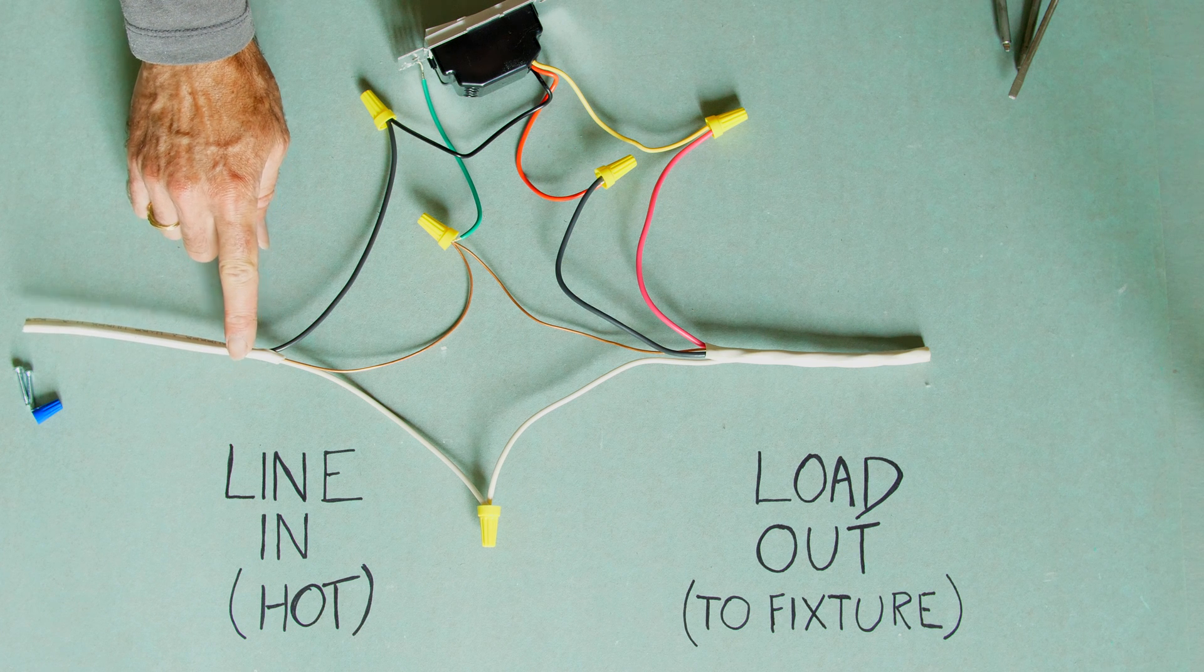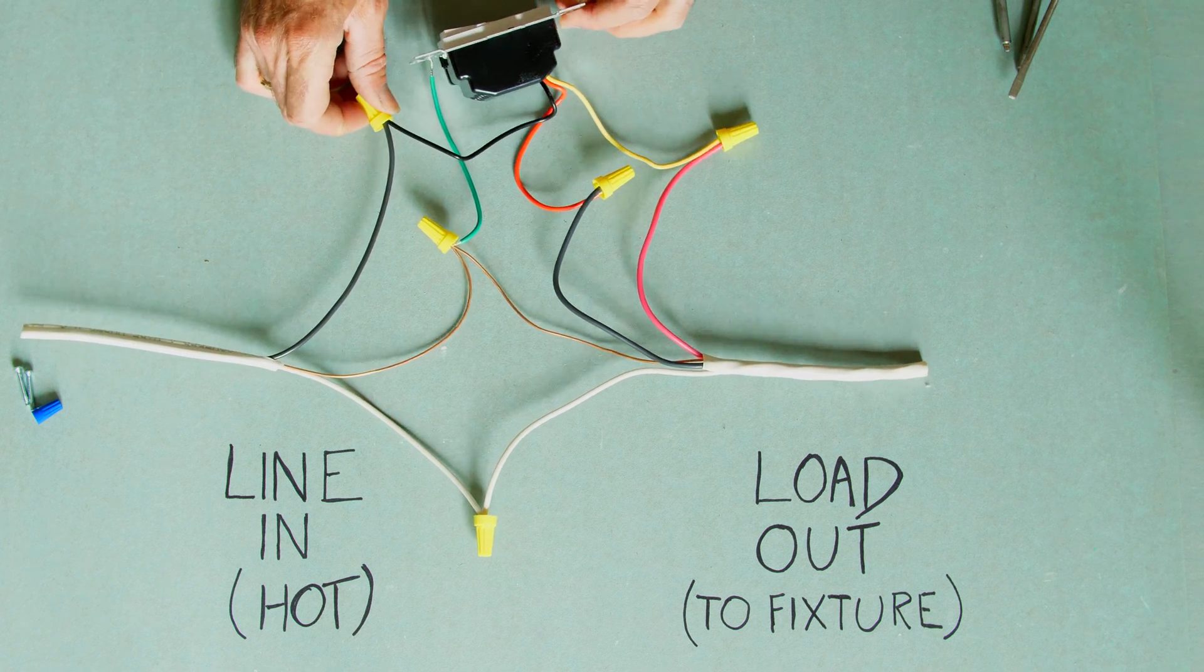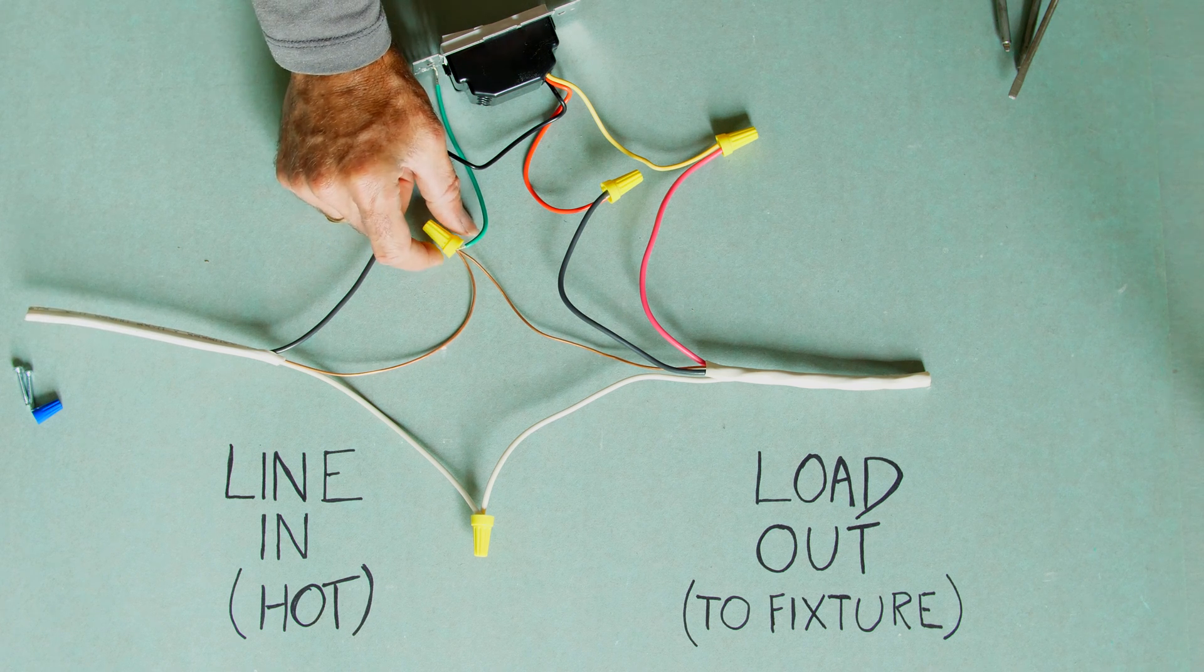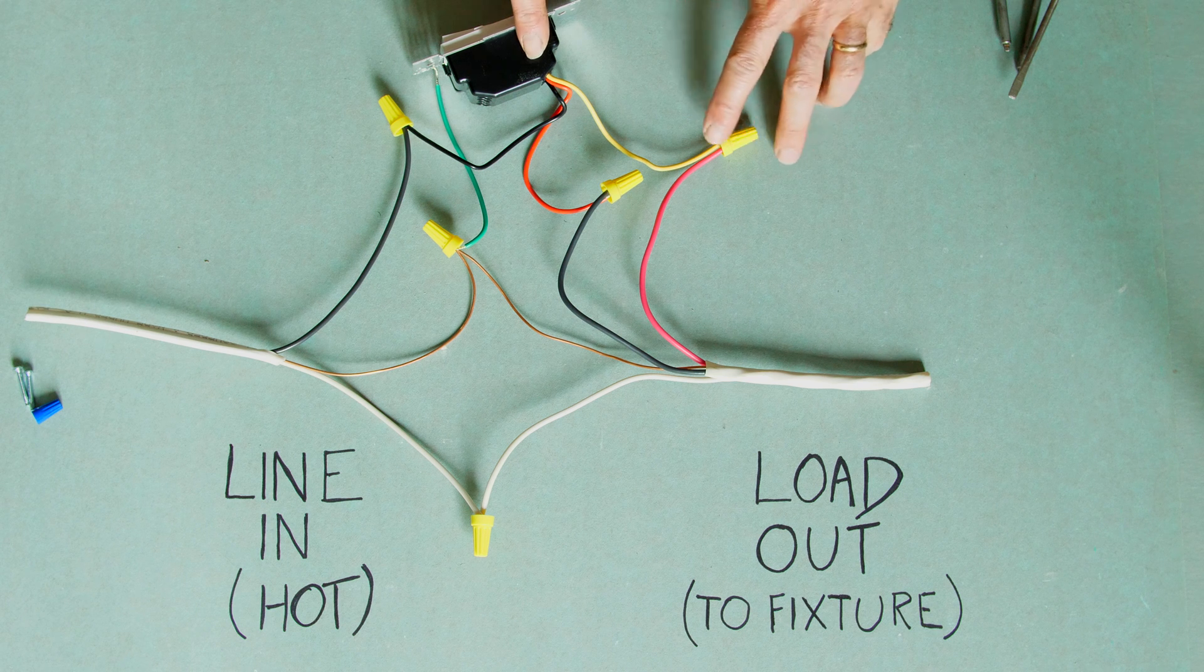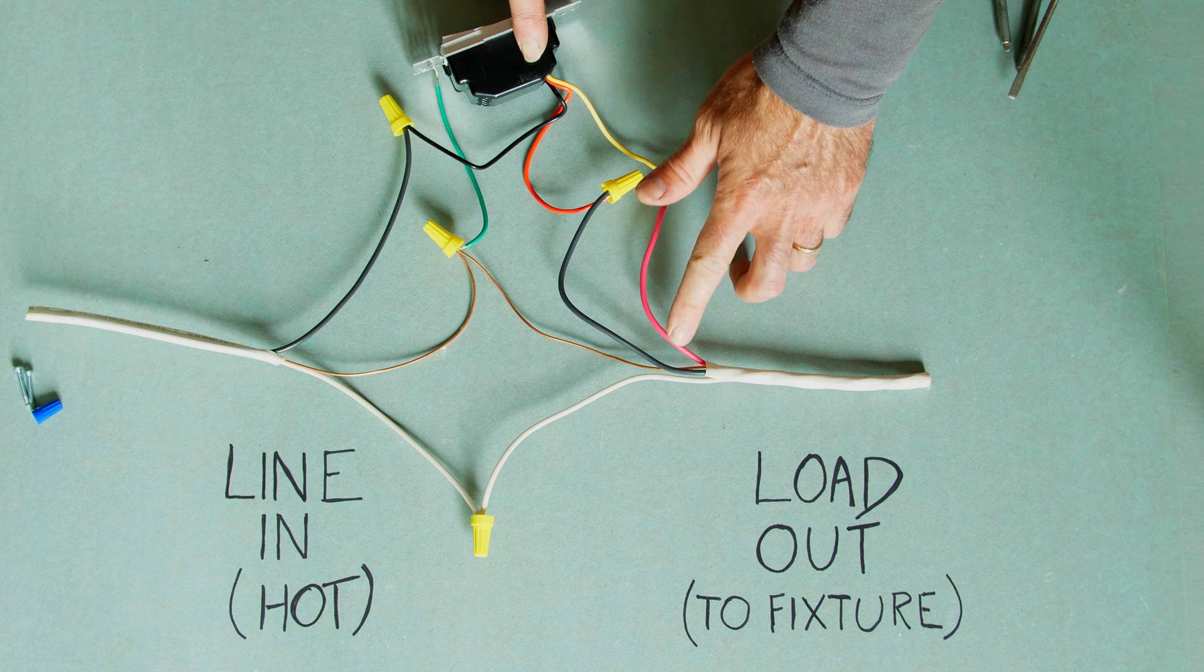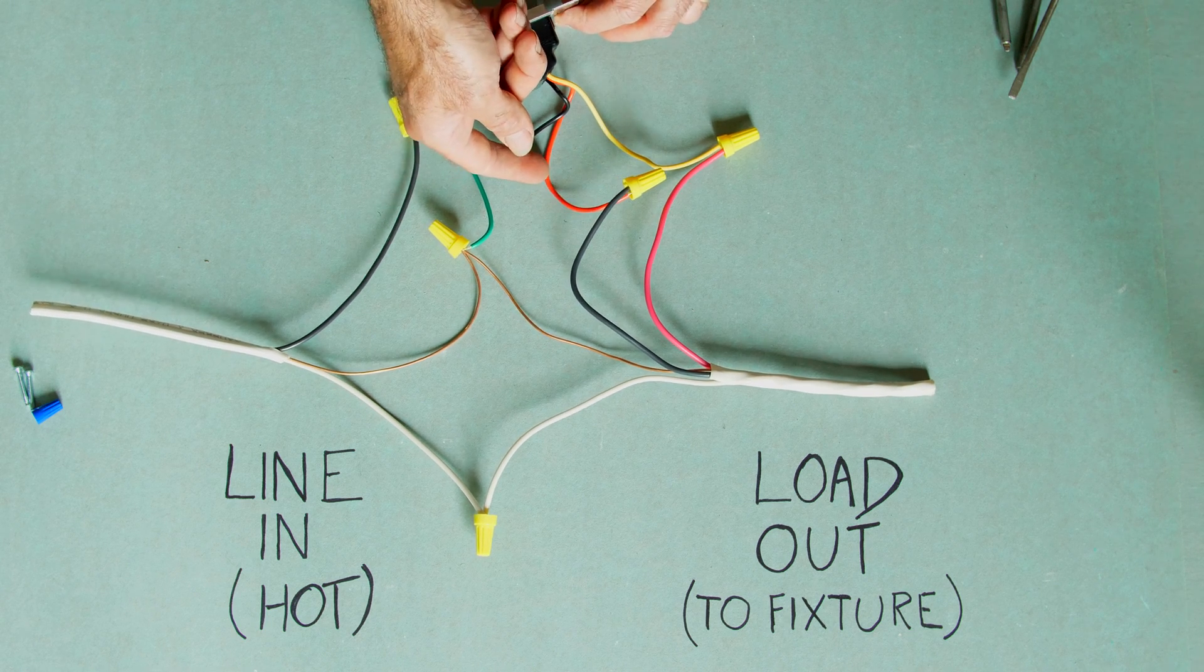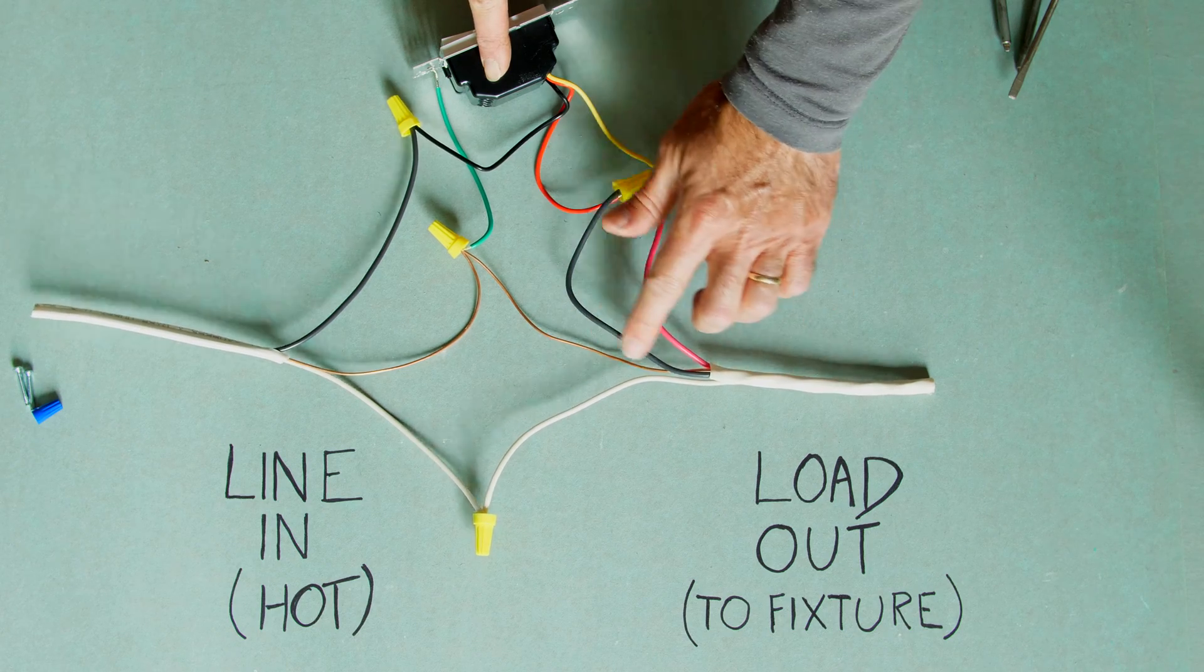So now with this wired up we see our black line in, our hot wire to our black from our switch. Our whites together, our grounds together, and again there'll be another ground from the junction box they're all connected together. Here I've got my designated light wire going to my light of my ceiling fan setup and I've got my designated red wire going to my designated motor ceiling fan motor wire.